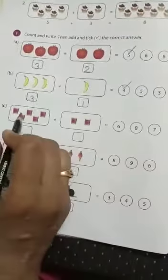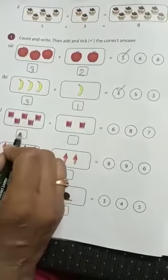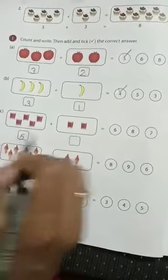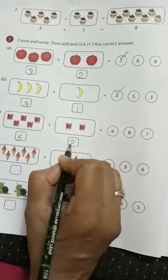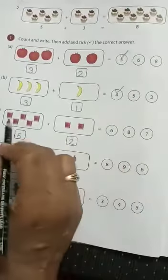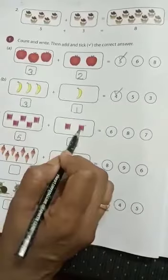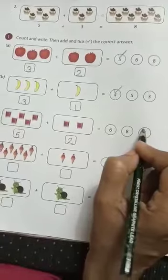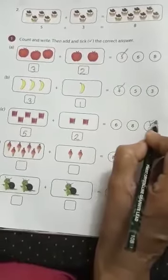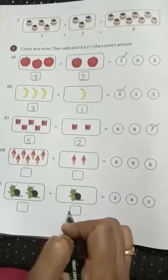Now let us count how many glasses: 1, 2, 3, 4, 5. So we will write here 5. And how many glasses here? 1, 2. We will write here 2. Now let us count: 1, 2, 3, 4, 5, 6, 7. So children there are 7 glasses in all. So we will tick the correct answer 7. In the same way you will complete this book exercise.